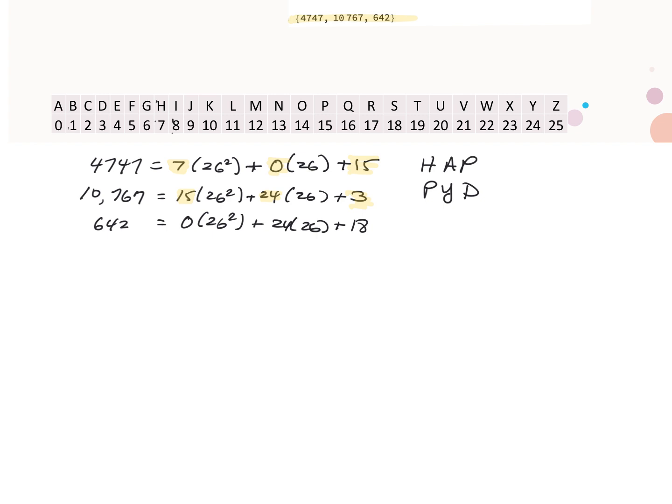The last three values we need to look up are 0, 24, and 18. 0 represents A, again, 24 represents Y, again, and 18 is S. So our message is happy days.